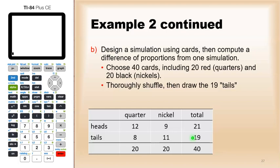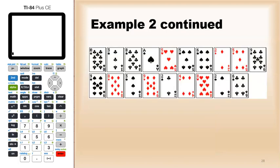Once I have those, then I can figure out the others by just subtracting. For example, suppose this is my result from shuffling and drawing 19 cards. I have 1, 2, 3, 4, 5, 6, 7 red, so 12 black.